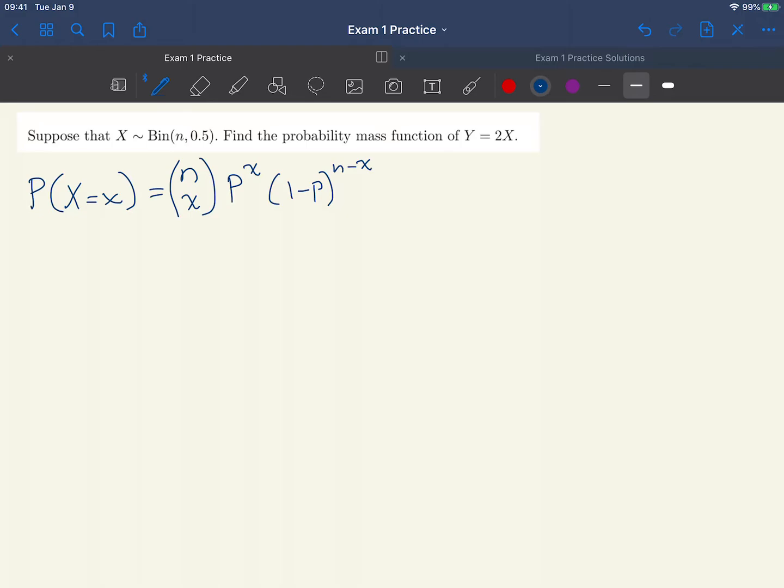To simplify this, we recall in the problem that our value for p is 0.5. Let's substitute that in: we have 0.5 to the x, and then 1 minus 0.5 is still 0.5, so we have 0.5 to the n minus x. With our exponent rules, we can combine those together to get n choose x, 0.5 to the n. This is the PMF of our random variable X.